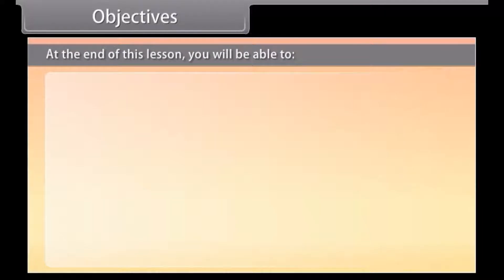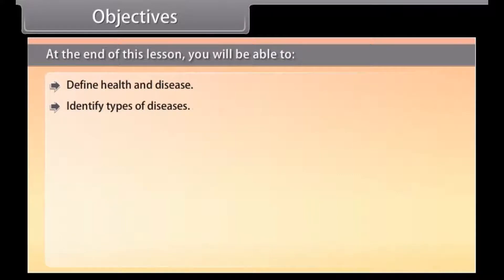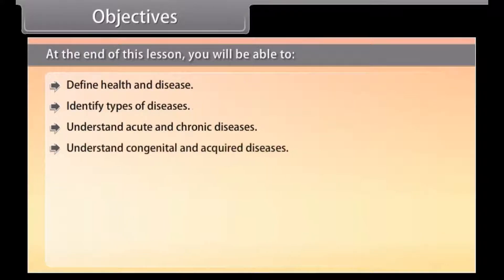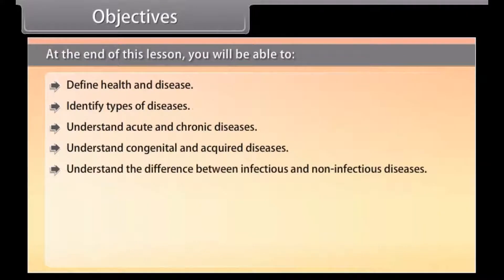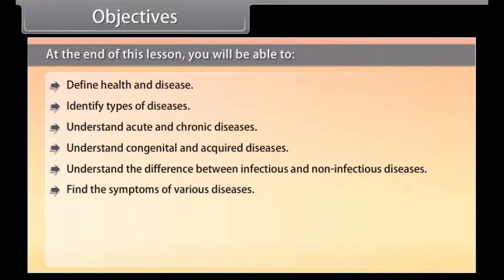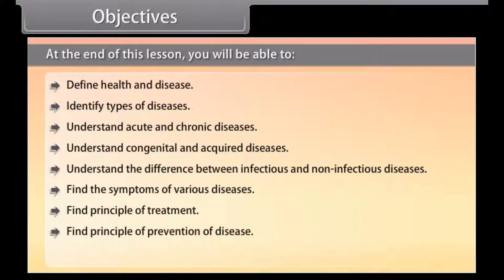Objectives: At the end of this lesson, you will be able to define health and disease, identify types of diseases, understand acute and chronic diseases, understand congenital and acquired diseases, understand the difference between infectious and non-infectious diseases, find the symptoms of various diseases, find the principle of treatment, find the principle of prevention of disease, and understand vaccination.